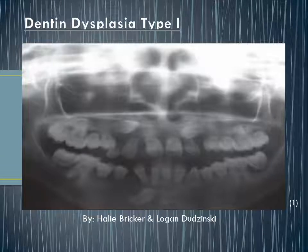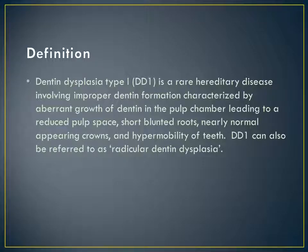Dentin Dysplasia Type 1, presented by Hallie Bricker and Logan Dudzinski. Dentin Dysplasia Type 1 is a rare hereditary disease involving improper dentin formation, characterized by aberrant growth of dentin in the pulp chambers leading to a reduced pulp space, short blunted roots, nearly normal appearing crowns, and hypermobility of teeth. It can also be referred to as radicular dentin dysplasia.